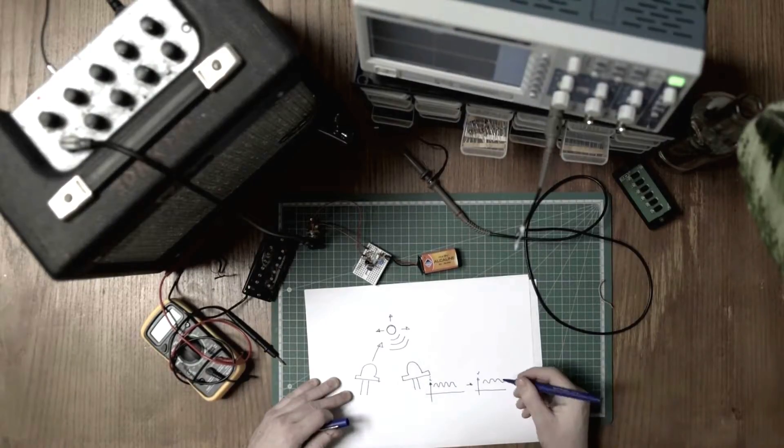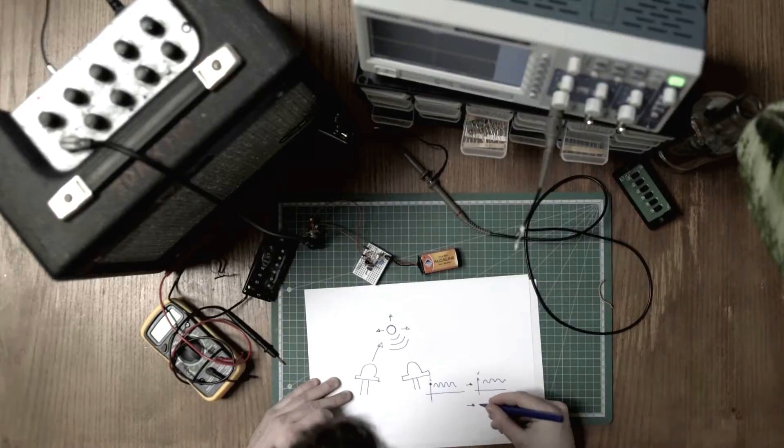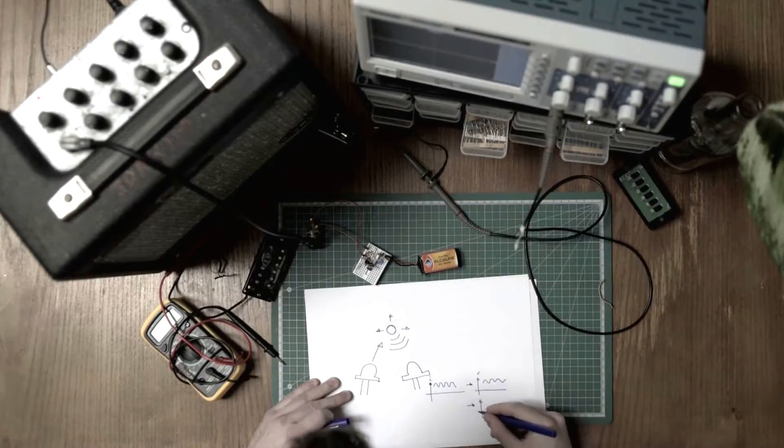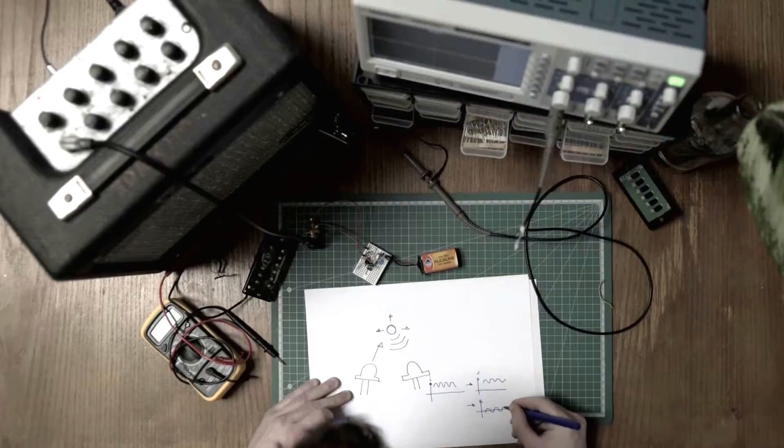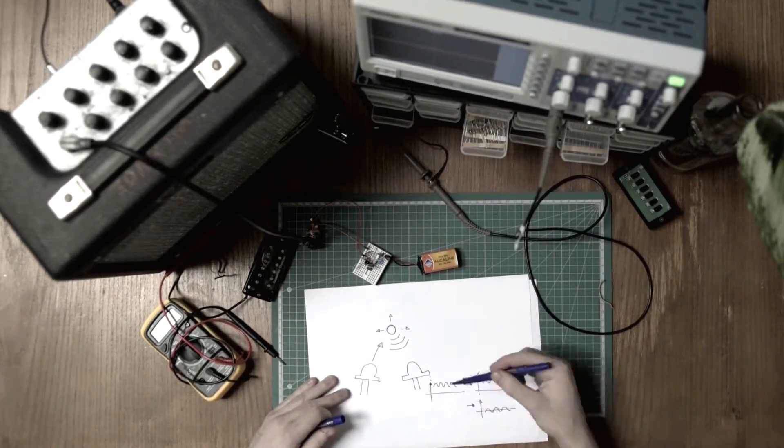And then we use a DC filter to put it back to zero, something like this. So it gives us an exact image of the movement of the strings.